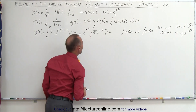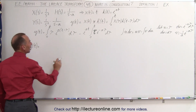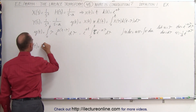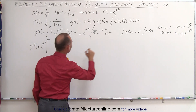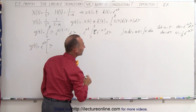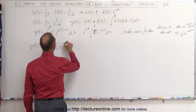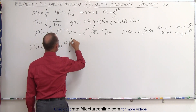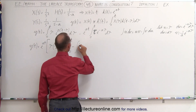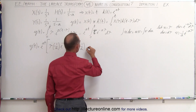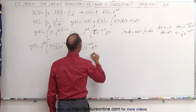Plugging that into our equation, we get y of t is equal to — keeping the e to the at — u times v, where u is tau and v is minus 1 over a times e to the minus a tau, evaluated from 0 to t, minus the integral of v du, where v is minus 1 over a times e to the minus a tau and du is d tau.